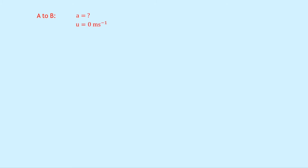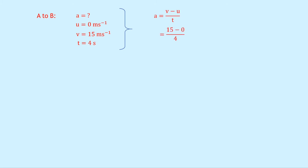Looking at the motion from A to B — the positively sloping line — to find acceleration we know the initial speed is 0 metres per second, the final speed is 15 metres per second, and that happens over a time of 4 seconds. Plugging into our equation a equals v minus u over t, we get 15 minus 0 divided by 4, which gives a final answer of 3.75 metres per second squared.